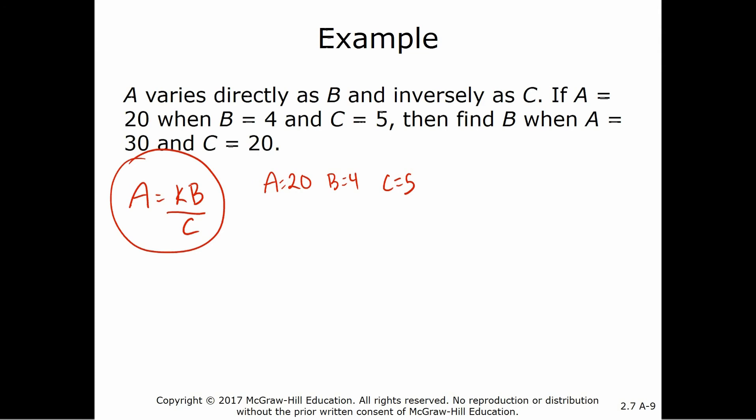Well, I'm given everything but k. I can just plug those in. 20 equals k times 4 divided by 5. So if I multiply both sides by 5, get rid of the fraction, we get 100 equals k times 4, divide by 4, we get k equals 25.